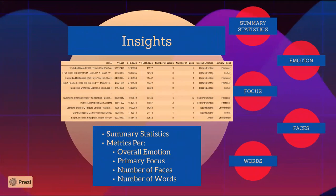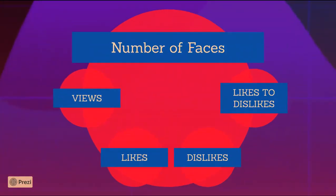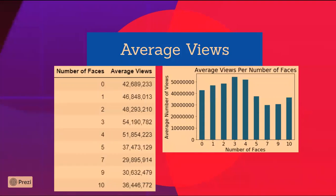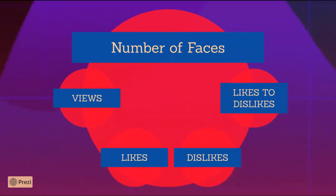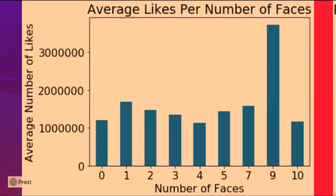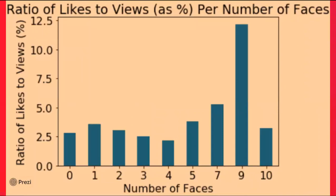Then I plotted video metrics for each number of faces. Thumbnails with fewer faces have a higher average number of views than thumbnails with more faces. Interestingly, thumbnails with 9 faces have the highest average number of likes — the only video with 9 faces in my dataset was the 2020 YouTube Rewind. If you treat that as an outlier, thumbnails with 1 and 7 faces have relatively higher average likes. When plotting the ratio of likes to views, thumbnails with 5 and 7 faces have greater ratios than thumbnails with 1 face.